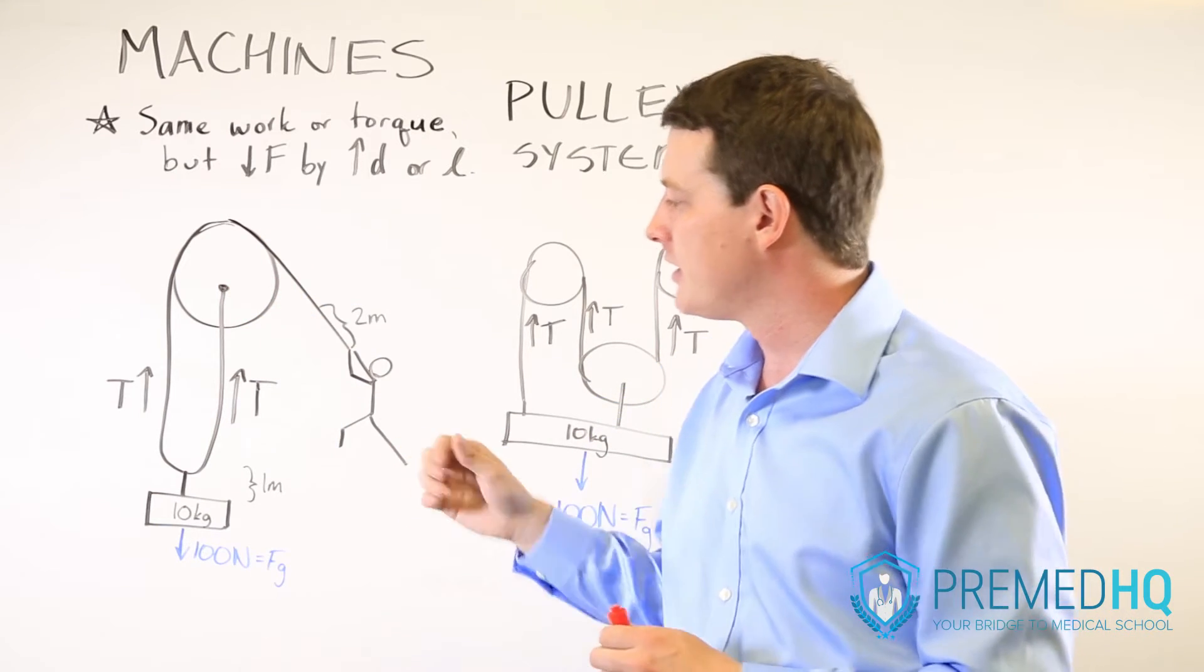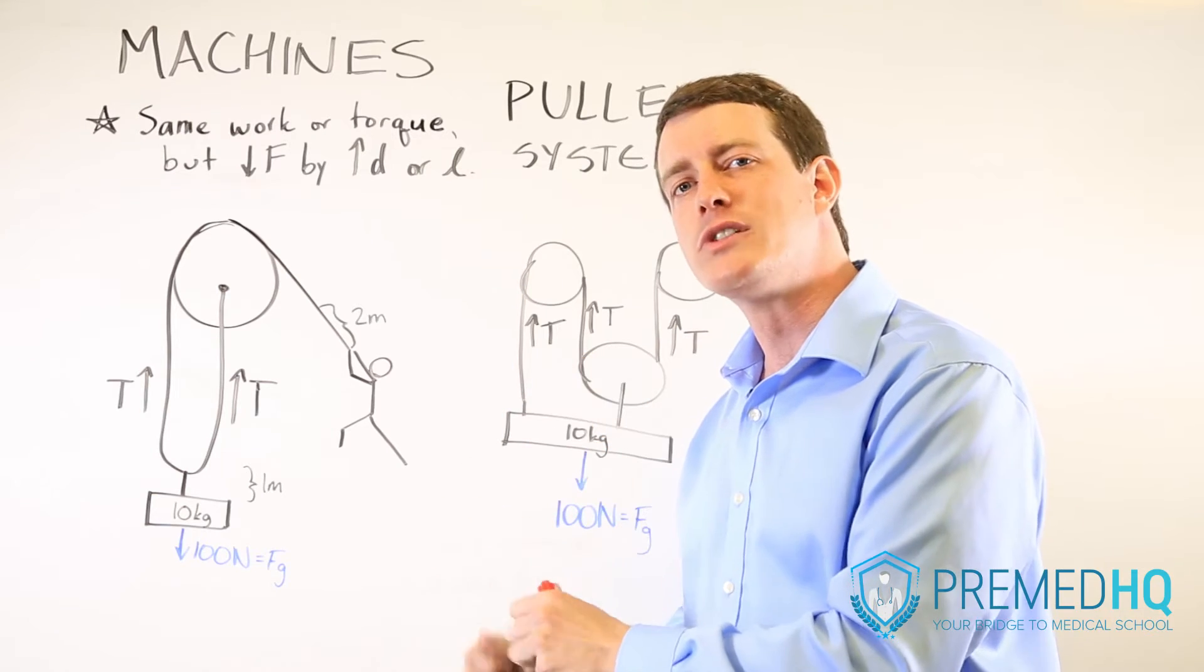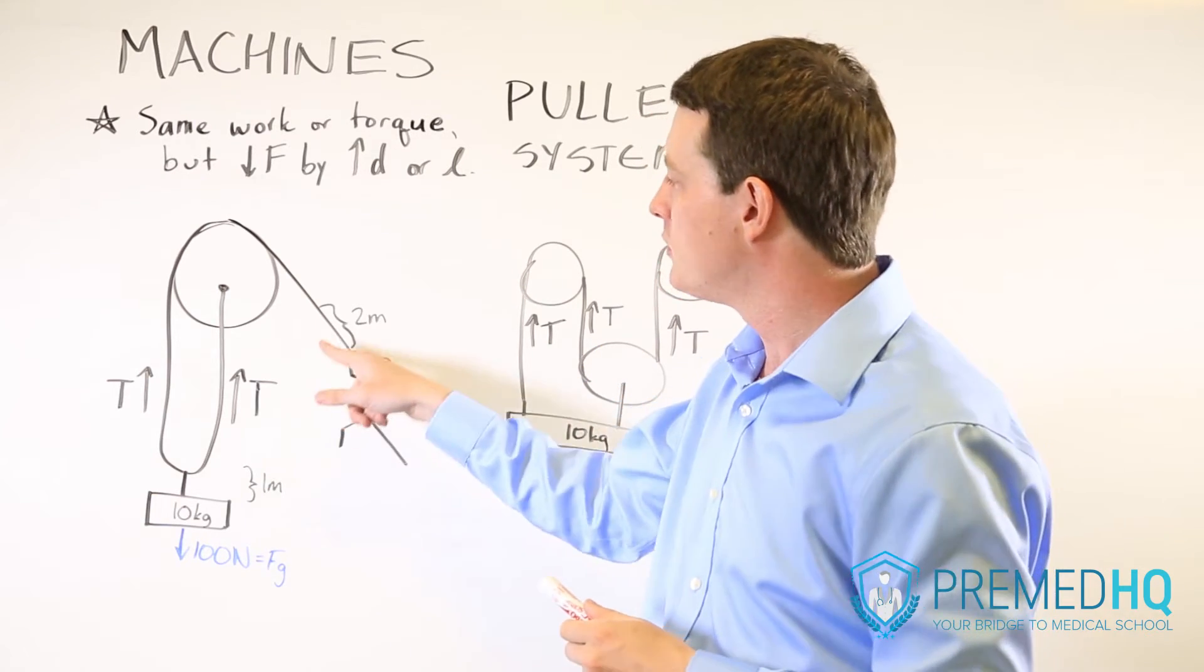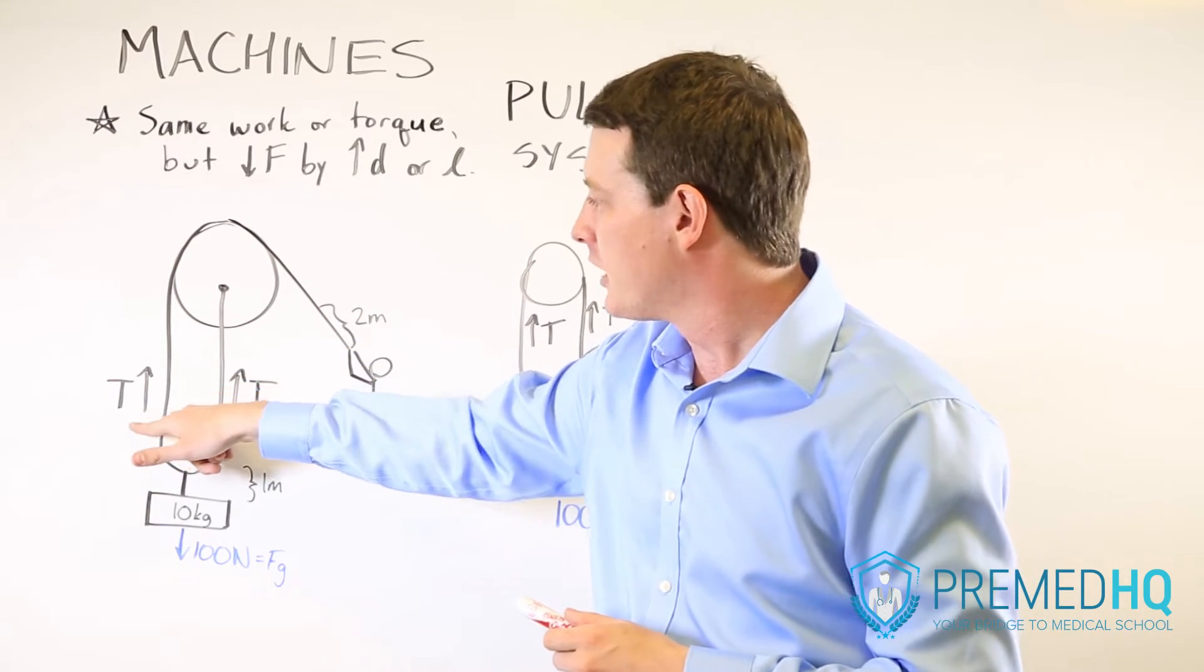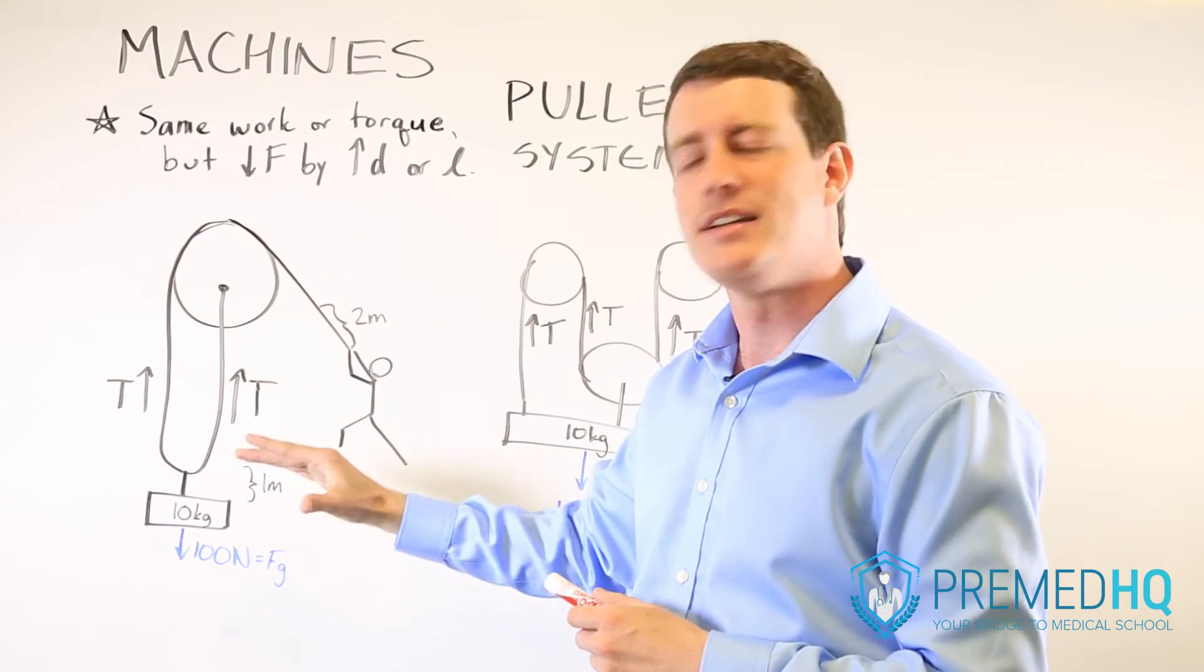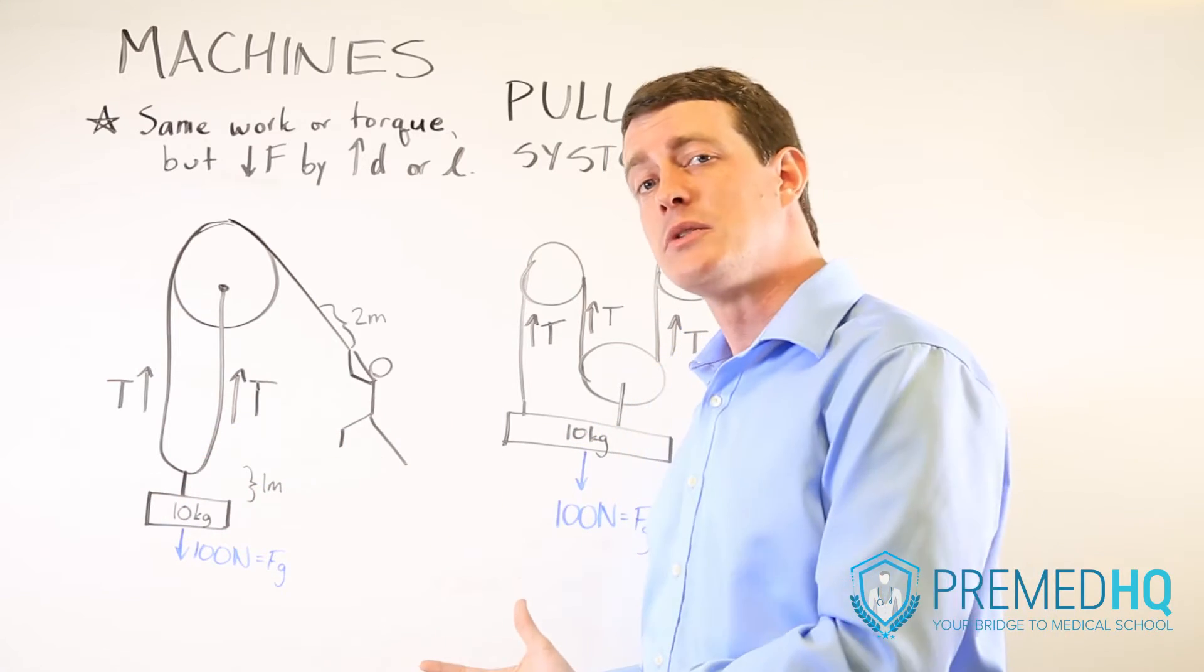So rather than having to lift it up with brute strength to have 100 Newtons of force pulling upward, instead you can create 50 Newtons of force by pulling on this rope and that will double. So you get 50 Newtons pulling up here and 50 Newtons pulling up here, and that will be enough to lift this object that has a weight of 100 Newtons.